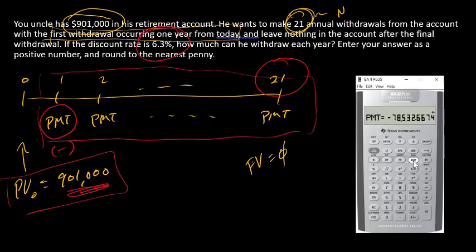I'm going to compute payment and there I have it. Your uncle has access to $78,532.67 per year for 21 years. So there's the answer, and of course report that to me as a positive value.